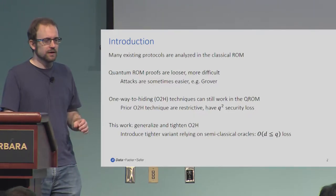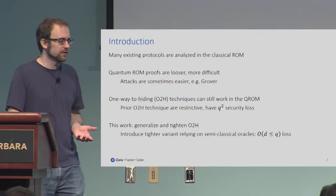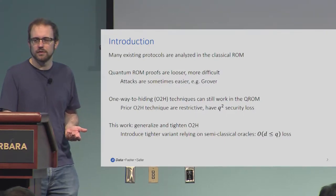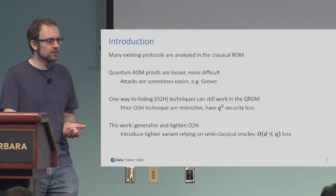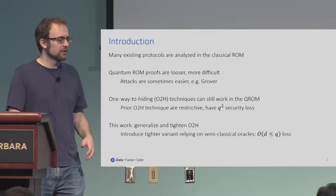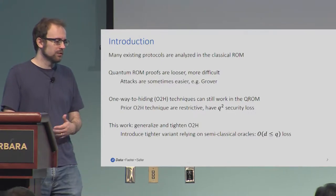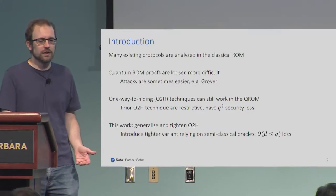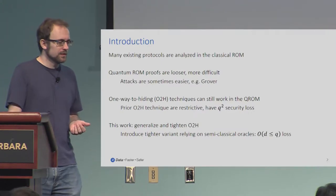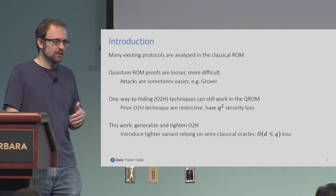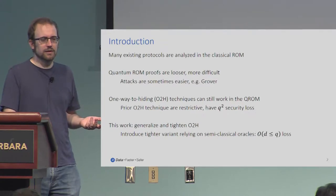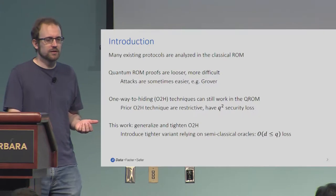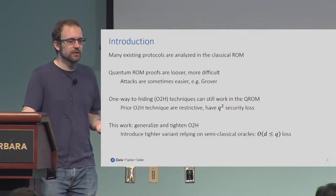Unruh's one-way-to-hiding only works in very restrictive settings and has a quadratic security loss in the number of queries Q that the adversary makes to the oracle. Here we generalized it, removed a bunch of the restrictions, and tightened it so that it can be as low as linear loss — linear in the depth of the queries that the adversary makes to the oracle, which practically speaking could be much less than the total number.